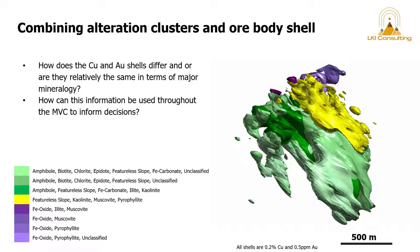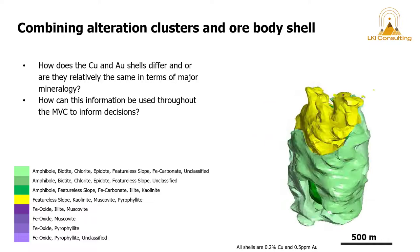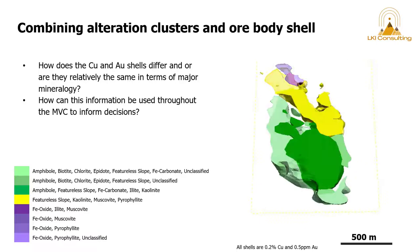Next question is going to be combining these alteration clusters and the ore body shell. And the question here is, do the copper and gold shells differ? Are they relatively the same in terms of major mineralogy? And importantly, how can this information be used throughout the mining value chain to inform decisions?